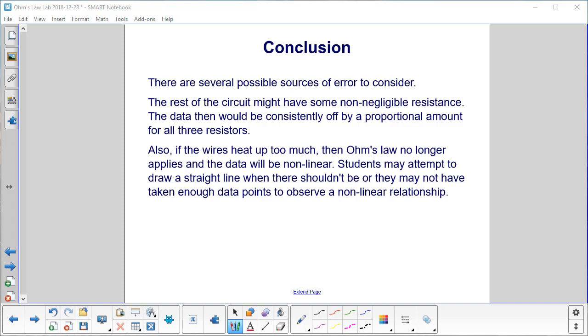There are several possible sources of error to consider. The rest of the circuit might have some non-negligible resistance. The data would then be consistently off by a proportional amount for all three resistors.